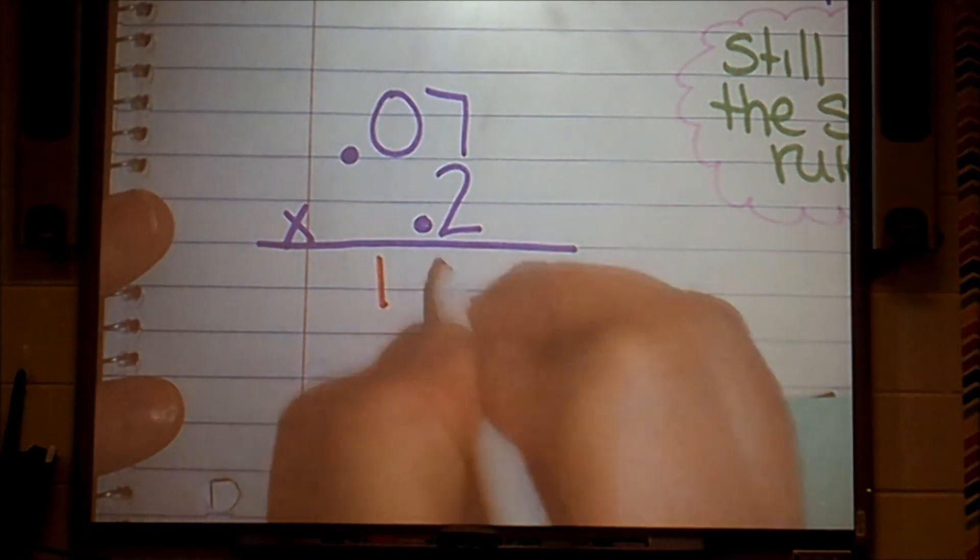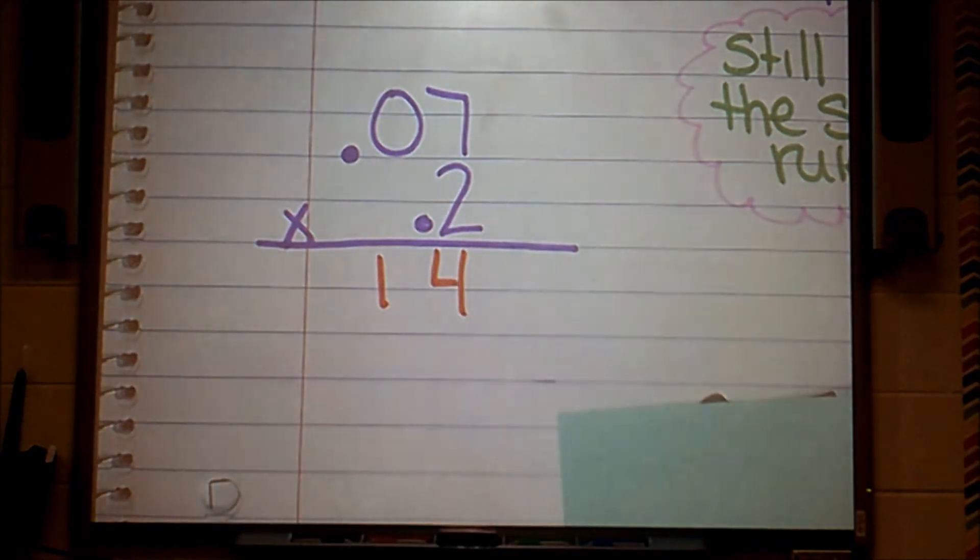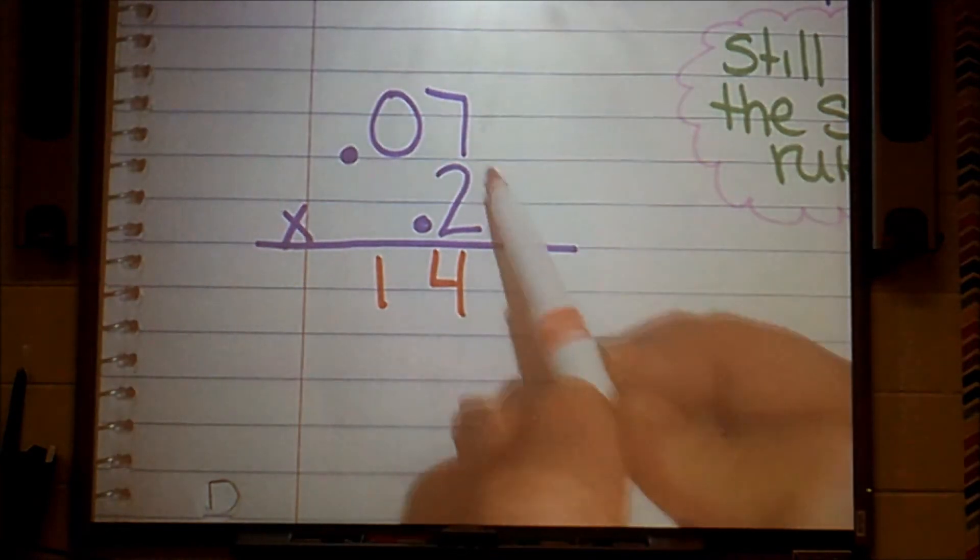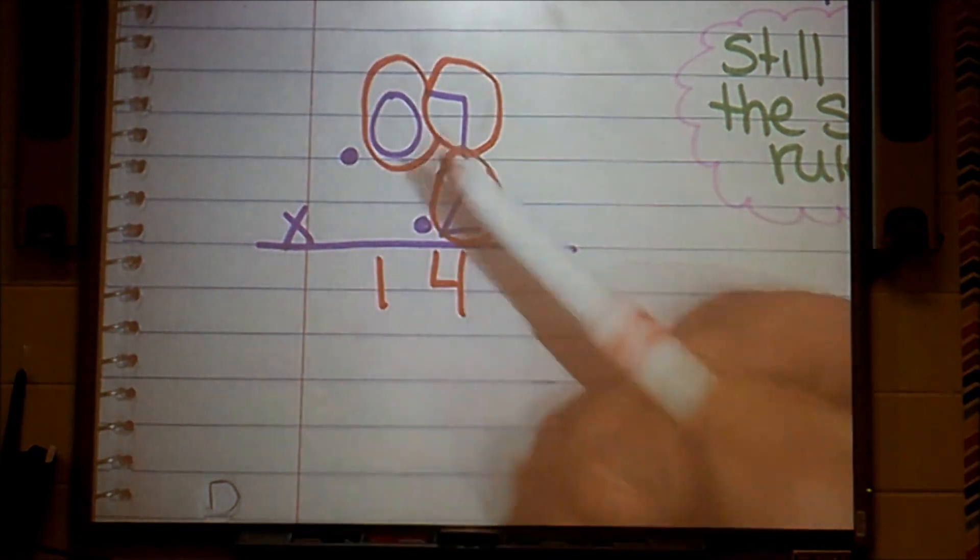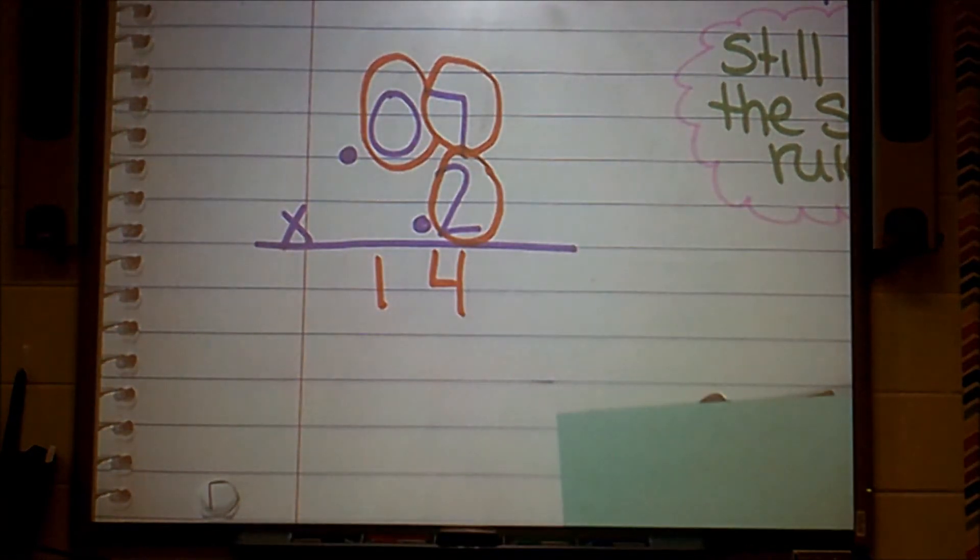That was hard. Now, here's where the tricky part comes in. Put those decimals back in. Now I'm going to count up how many digits are behind my decimals. One, two, three. I have three digits that need to live behind my decimal. They need to hold the place values.